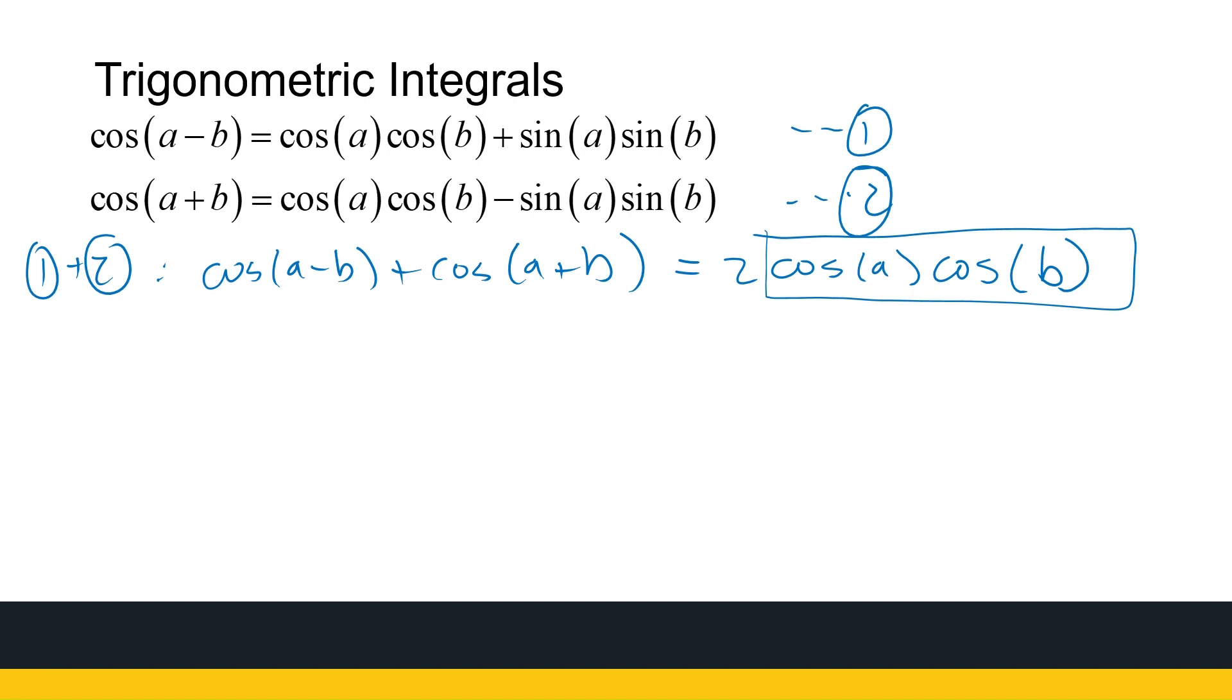We're going to use this to simplify integrals of the form cos(a)cos(b). If I subtract the two equations, I get cos(a - b) minus cos(a + b) is zero plus two sin(a)sin(b). So divide both sides by two and I'm going to use this formula to help me simplify integrals of the form sin(a)sin(b).